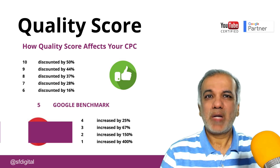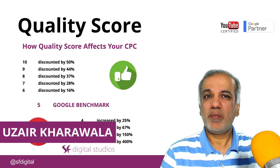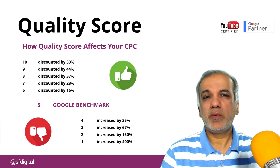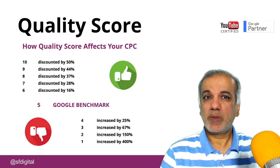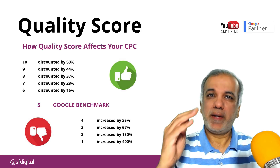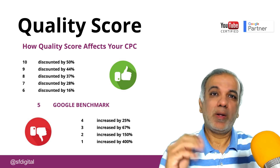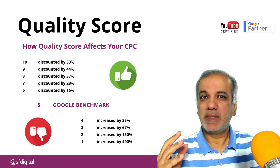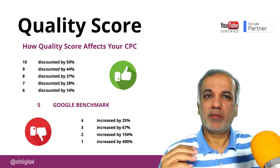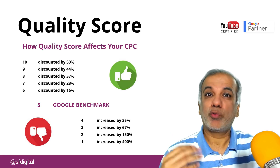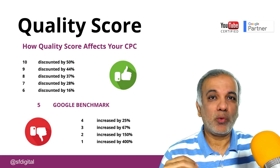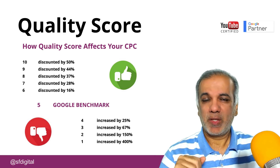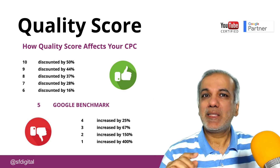Hello, I'm Uzair and in this short video, I'm going to show you how you can increase your quality score, pay less for your cost per click and increase your ad rank all at the same time. Now, most people or most advertisers think that bidding more aggressively or throwing more money at Google will get them ranked higher in the ads, but that is not the case.